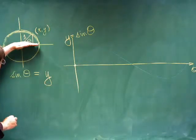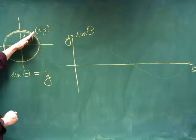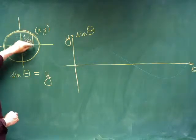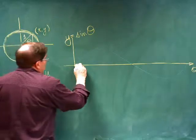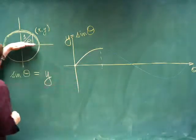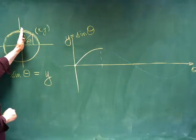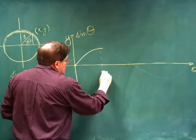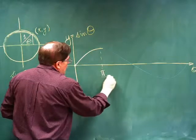As theta begins to increase, that y value grows until it finally gets up here to 1. And that occurs when theta is at 90 degrees, or if we're measuring in radians, that would be pi over 2.